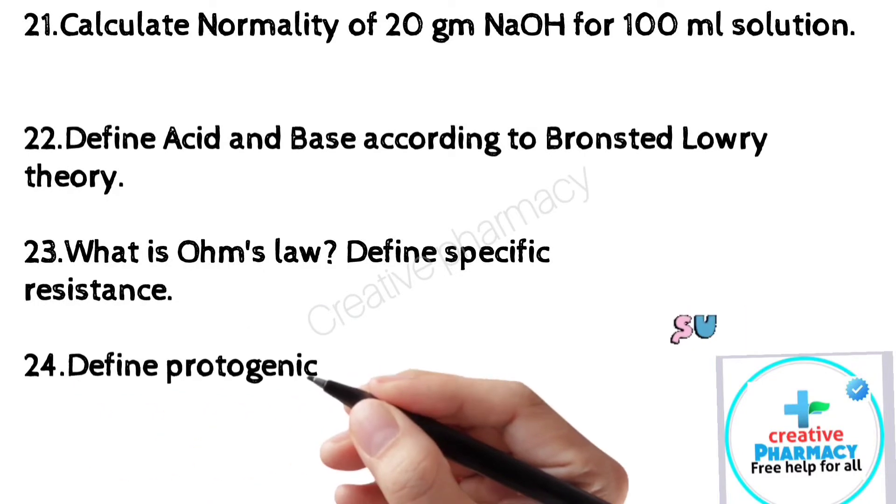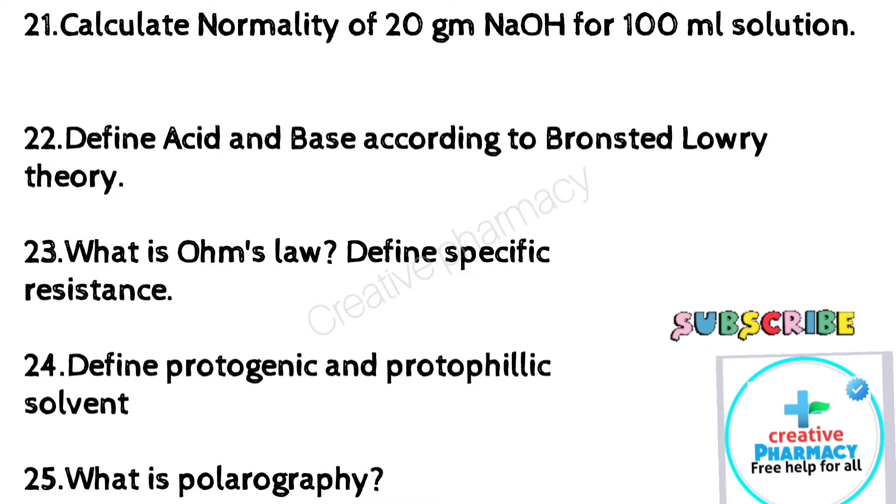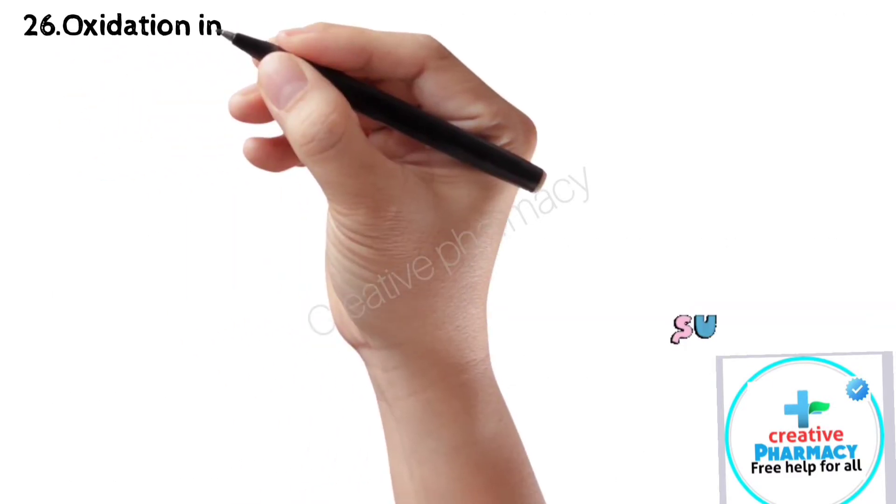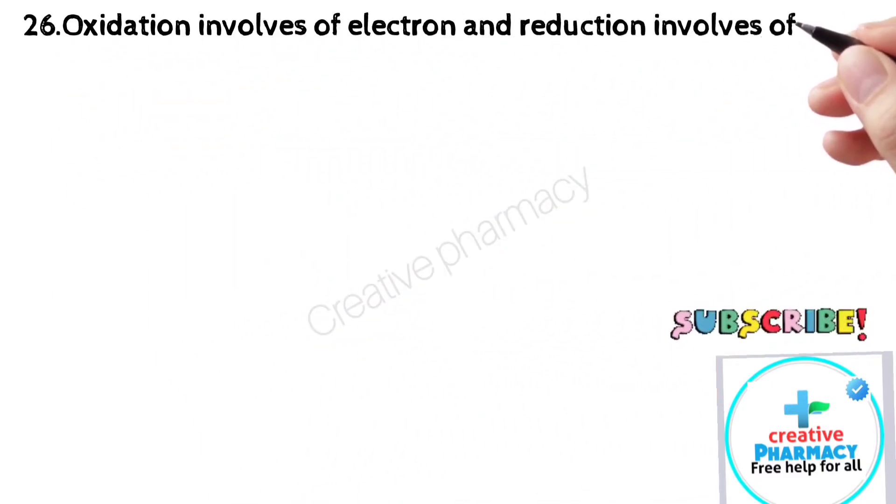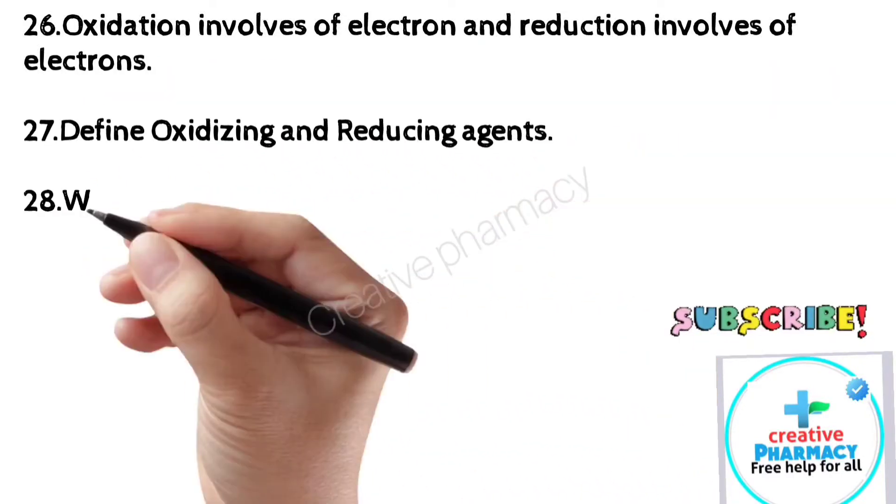24. Define protogenic and protophilic solvent. 25. What is polarography? 26. Oxidation involves loss of electron and reduction involves gain of electrons. 27. Define oxidizing and reducing agents.